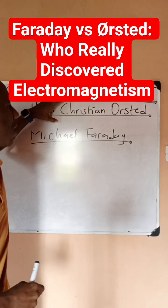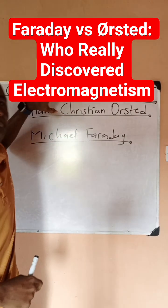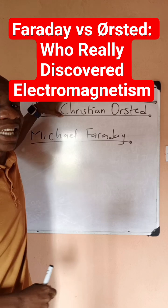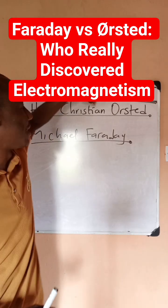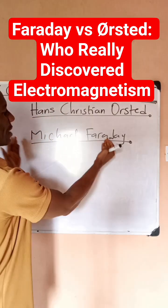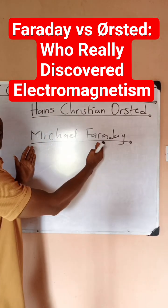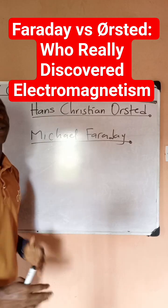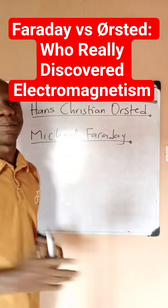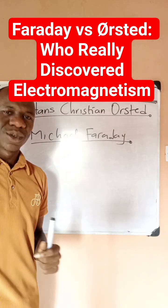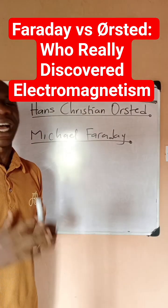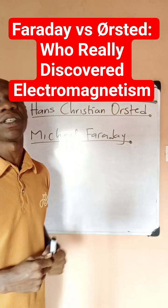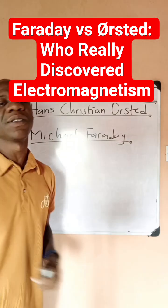So what are their concepts? This one told us that a magnetic field can be created from electricity, while this told us that electricity can be created from magnetism. So do not confuse their concepts. I believe this is very clear. Thanks for watching Prime Concepts.